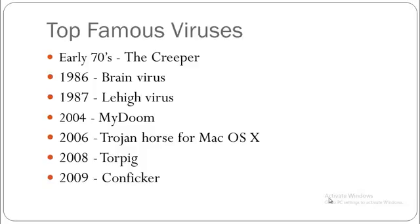Now I'll teach you about the most dangerous viruses of all time. In the first half of the 70s, or late 60s, there were 'Rabbits' — you heard right, Rabbits. They cloned themselves and occupied system resources, slowing down productivity. Rabbits were one of the most dangerous viruses before the early 70s. They did not gather any information — they just wanted to bring the system down.